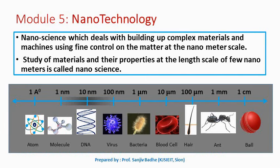In 1959, Nobel laureate Richard Feynman presented an idea of building materials atom by atom, and this idea evolved into a new branch of science which is called nano science. Nano science deals with building up complex materials and machines using fine control on the matter at the nanometer scale. In nano science, we will be studying properties of the materials having the length scale of the order of few nanometers.